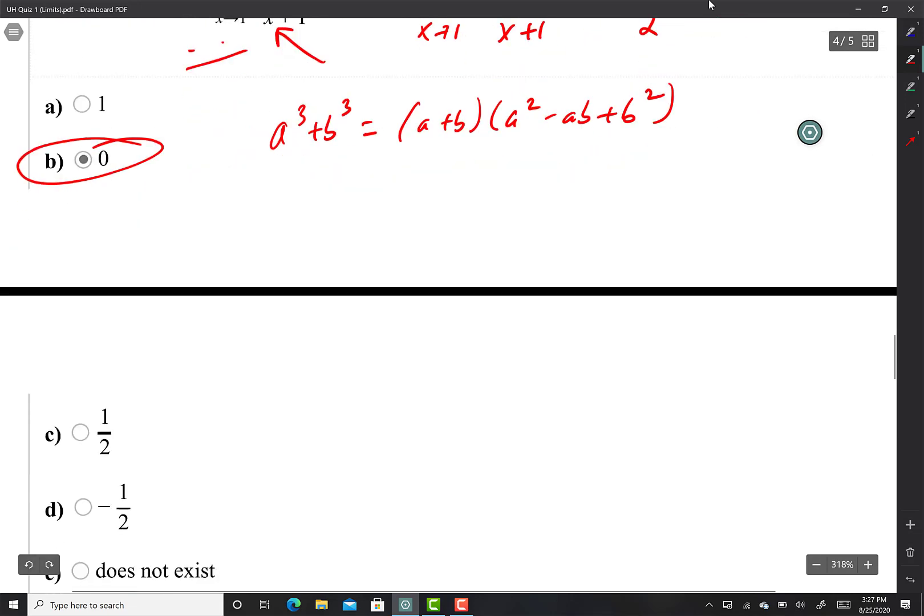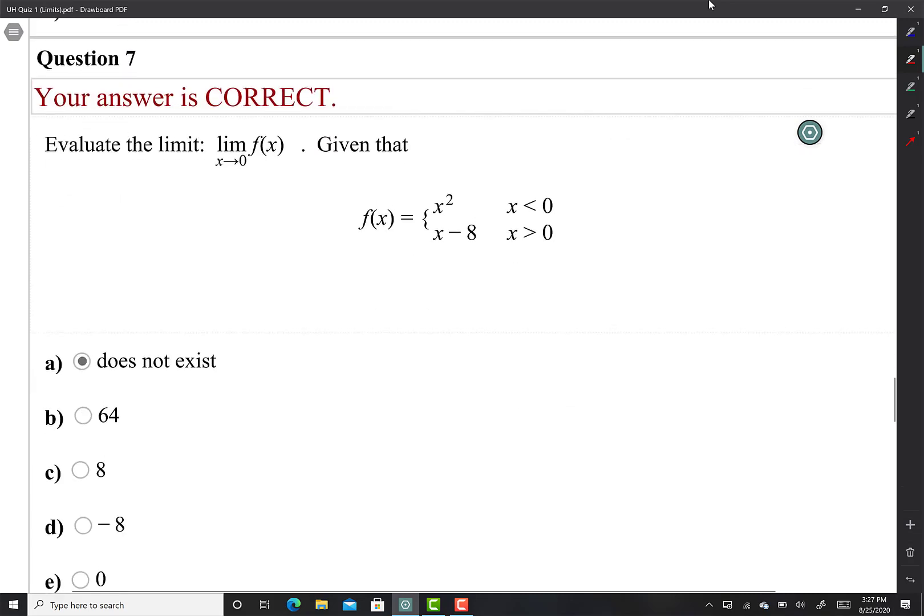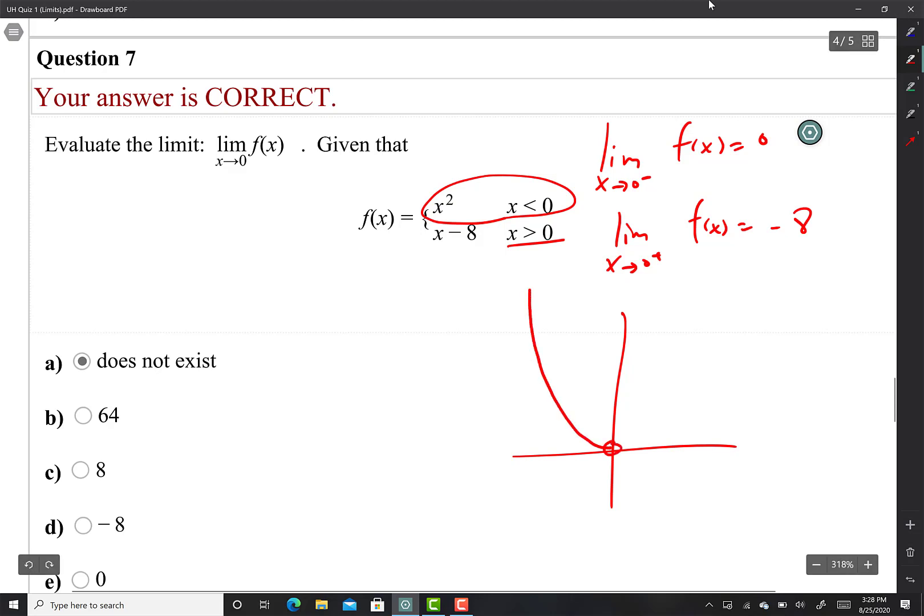This one, limit as x approaches 0. I need to test both from the left and the right. Limit as x approaches zero from the left is zero because I'm using this one, 2x squared. Limit as x approaches zero from the right is negative 8. The function looks like a parabola with a hole, then goes to negative 8 with another hole, then slope of one. If I approach from the left I'm approaching zero. If I approach from the right I'm approaching negative 8. Since I'm approaching two different numbers, does not exist.